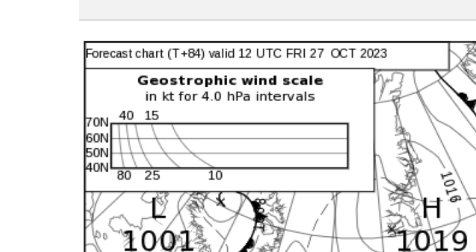The intervals they're talking about is the gap between the depicted isobars on the chart. On the left of the scale are lines of latitude in 10-degree increments: 40 north, 50 north, 60 north and 70 north. Lines of latitude are curved on this type of map projection, which appears to be polar stereographic although it isn't labelled. The lines of latitude are often not labelled either, so you do need to know the latitude you're interested in in order to use this scale.